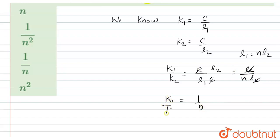Hence, the ratio of spring constants K1 and K2 will be 1 upon N. This is the right answer, that is option C. I hope you understood this explanation. Thank you.